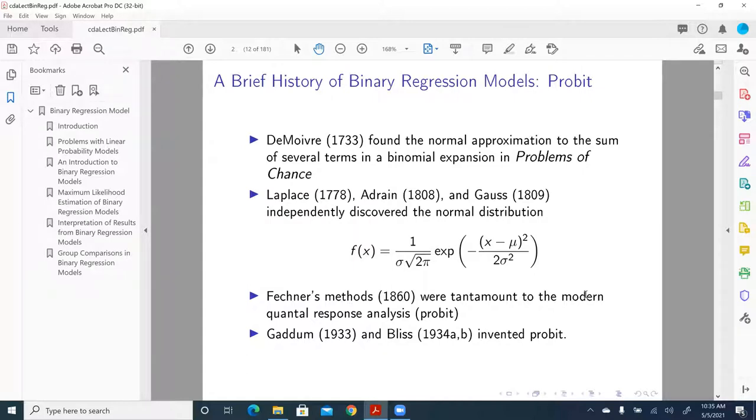And in most literature, Bliss's 1934 paper published in Science is usually considered to be the first application of this modern form of binary regression models.